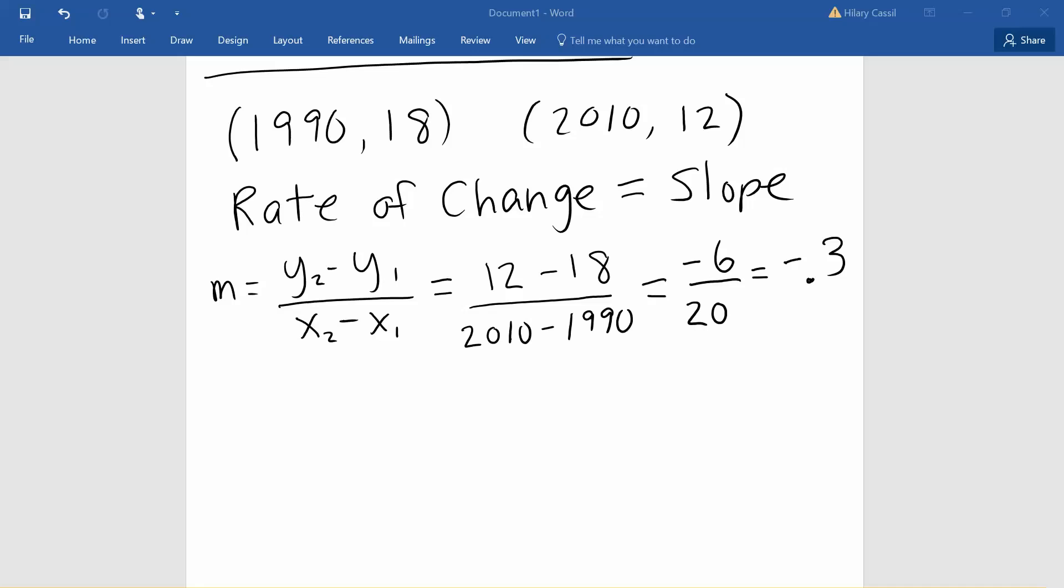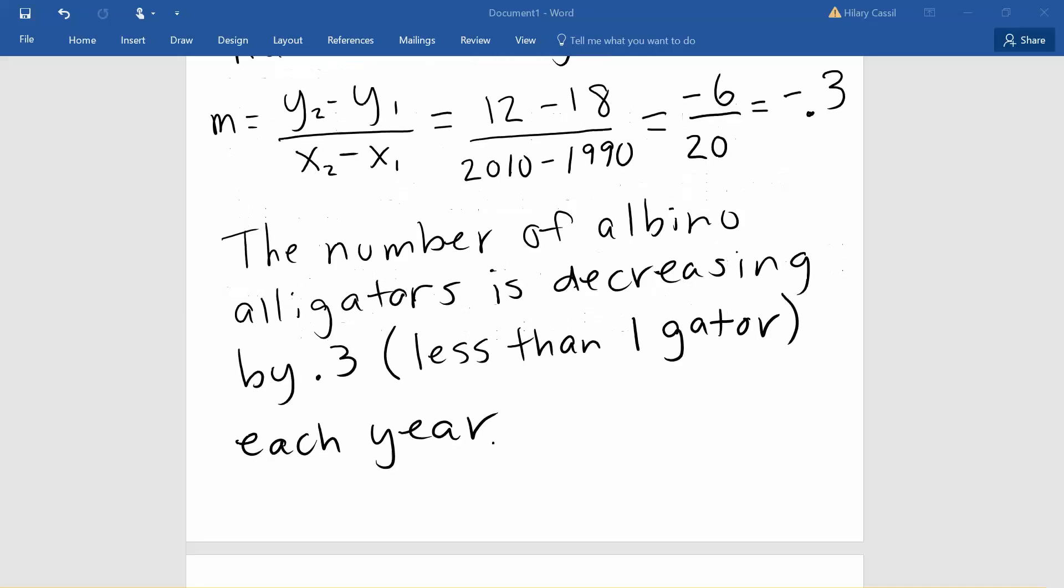We do want to interpret this because that is a huge part of what we do in this class. In this case since our rate of change is negative we know that our values are decreasing, so a good interpretation might say that the number of albino alligators is decreasing by 0.3, in other words less than one gator each year.